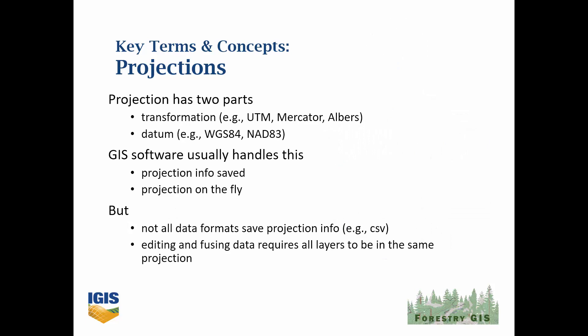Getting into the weeds a bit, a projection has two parts: an equation that squishes spherical coordinates onto a 2D surface, and a model of the Earth, which is called the datum. Modern GIS software handles most of this and can even overlay layers saved in different projection systems on the fly. However, there are definitely occasions where you as a GIS person need to know the specific projection system being used — for example, if you are importing points from a spreadsheet, you're going to need to tell your GIS program which projection system those coordinates are saved in. Some spatial operations also require all layers to be saved in the same projection system.